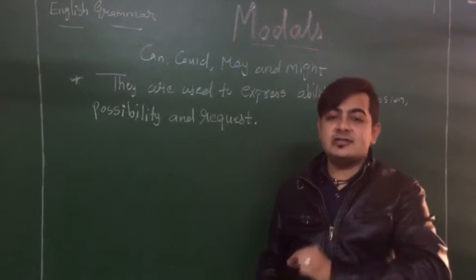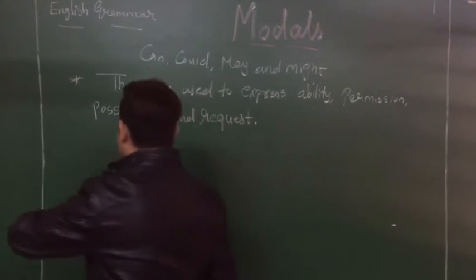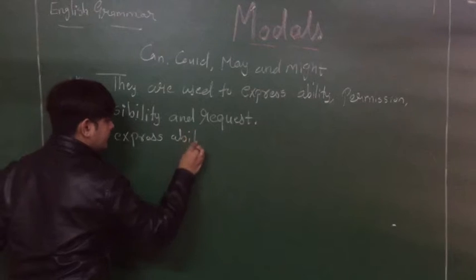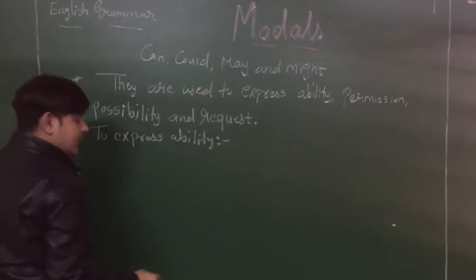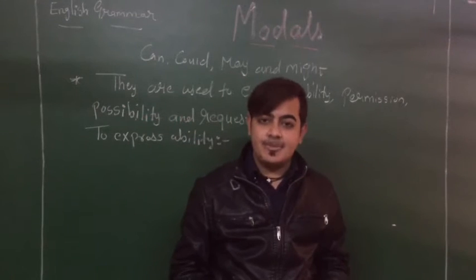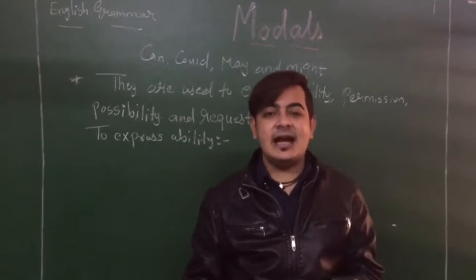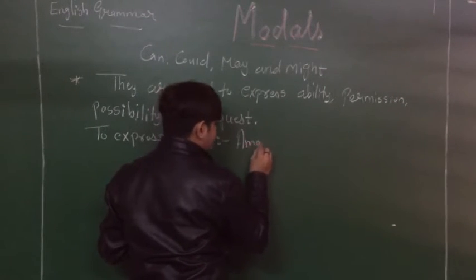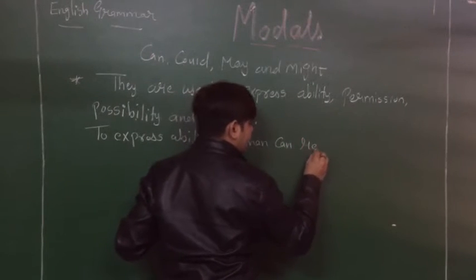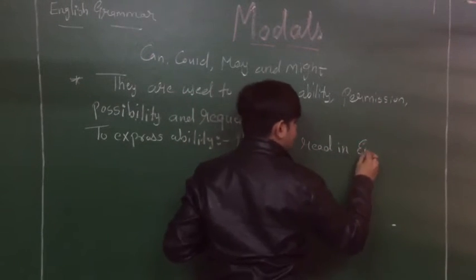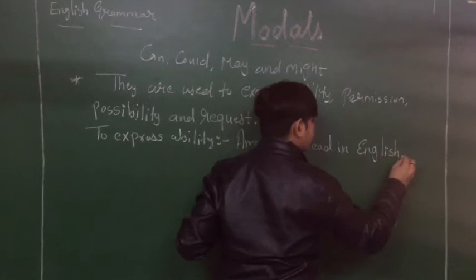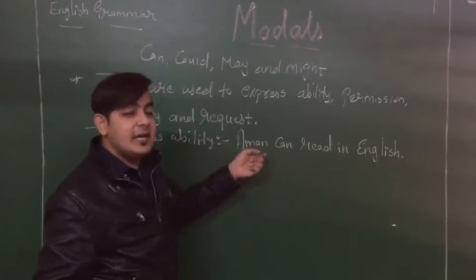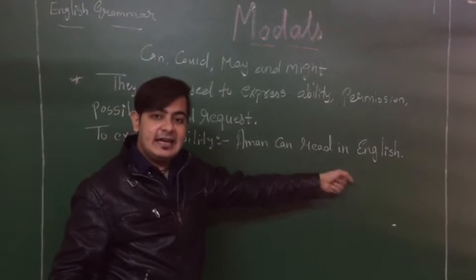To express ability, we use can or could. Ability means what a person is capable of doing. For example: 'Amand can read in English.' So this is the ability of Amand — that he can read in English. This is how we express ability using the modal 'can.'